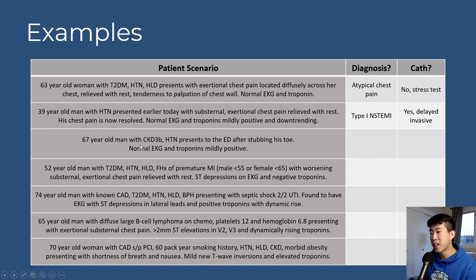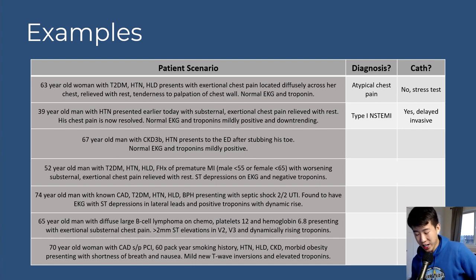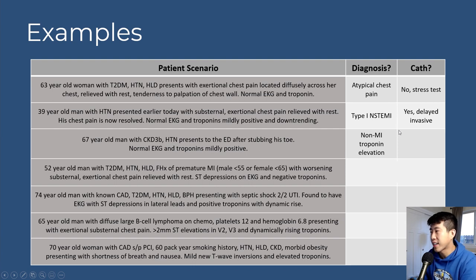Scenario 3: 67-year-old man with CKD and hypertension presenting to the ED after stubbing his toe badly. Normal EKG, mildly positive troponins. With CKD and no cardiac symptoms, this is a non-MI troponin elevation. No cardiac catheterization is indicated.